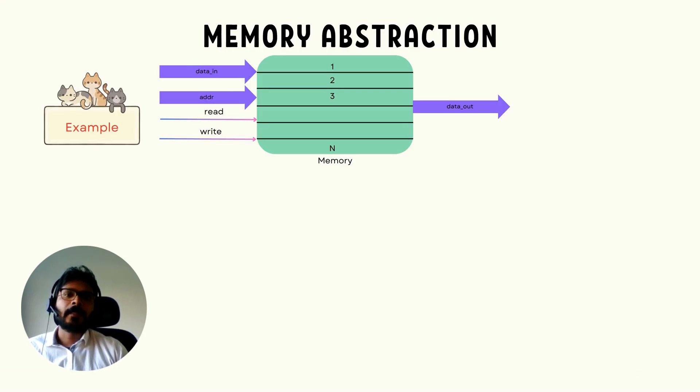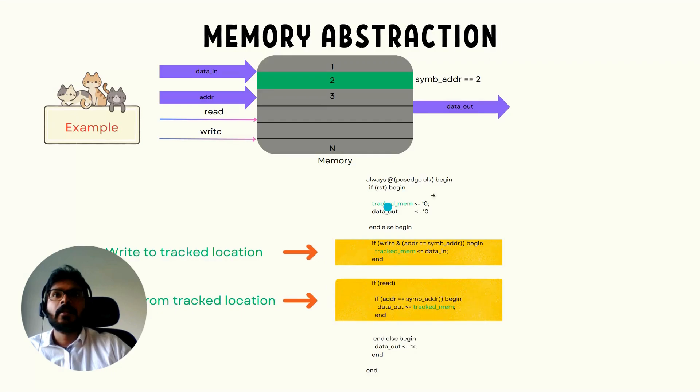Let's look at an example. Here's a memory with n locations with multi-bit data input, address, and single bit read and write control signals, and this is the data out from this. Let's see if we can abstract this memory and track just one out of these n locations. This is how you can abstract it. The code is as shown here.